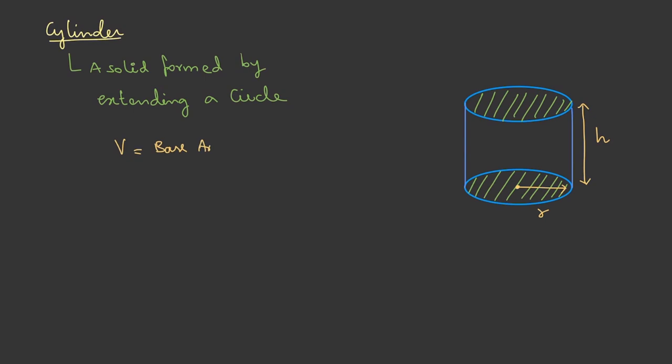Volume is base area into height. That is V is base area is the circle. Therefore, pi r square and the height is h. So, the volume is pi r square h for a cylinder.